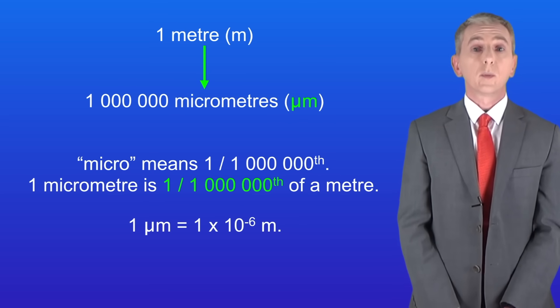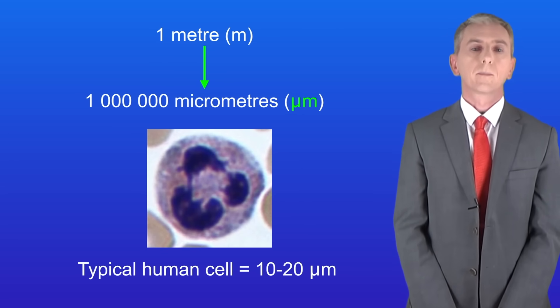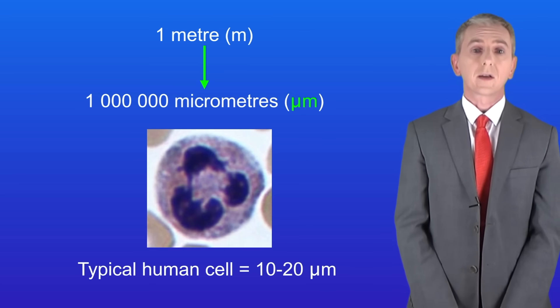A typical human cell such as this one is around ten to twenty micrometers in size. That means that biologists find a micrometer a very useful unit especially when looking at cells.